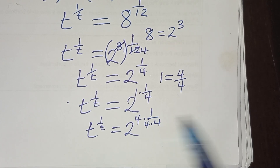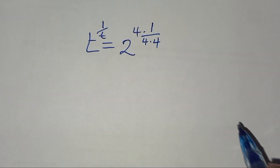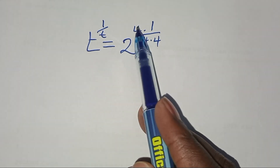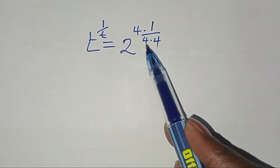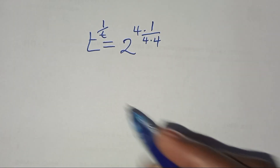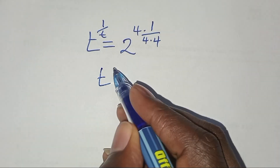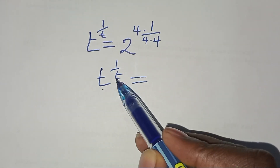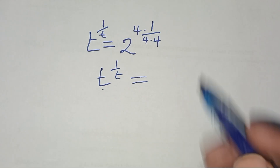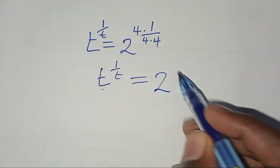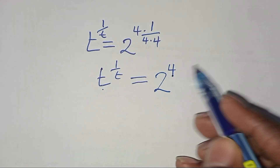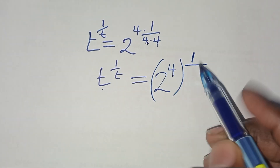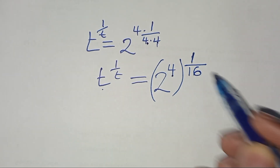Proceeding from here, we have t to the power (1 over t) is equal to 2 to the power 4, times 1 over 4 times 4. We can see that the base t is equal to the exponent t here, giving us 2 to the power 4, multiplied by 1 over 4 times 4, which is equal to 16.